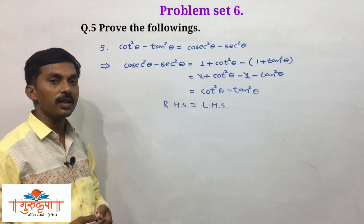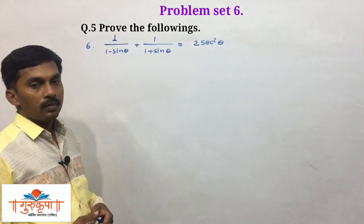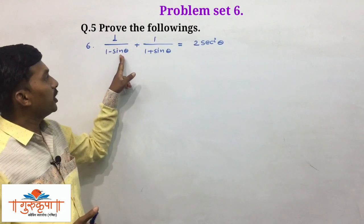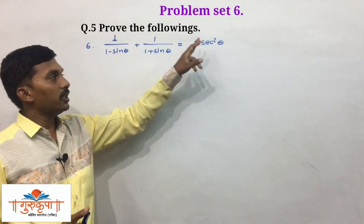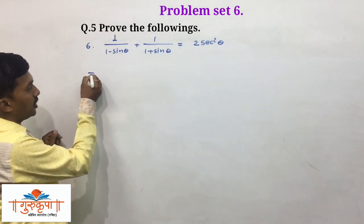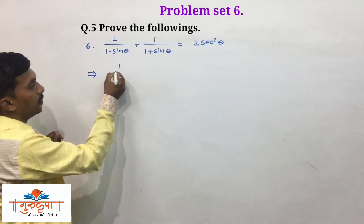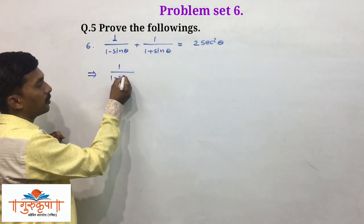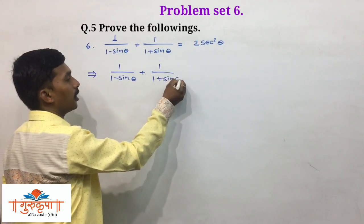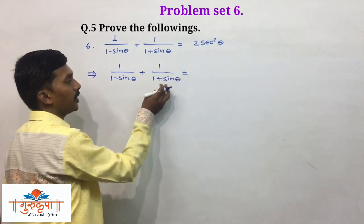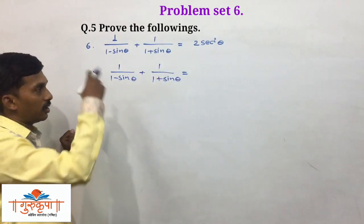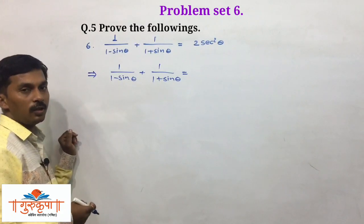We will take the next example — example number 6. We have to prove that 1 upon (1 minus sin theta) plus 1 upon (1 plus sin theta) equals 2 times sec squared theta. We write LHS as it is: 1 upon (1 minus sin theta) plus 1 upon (1 plus sin theta).